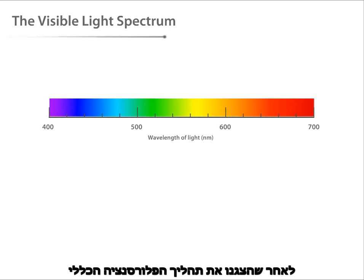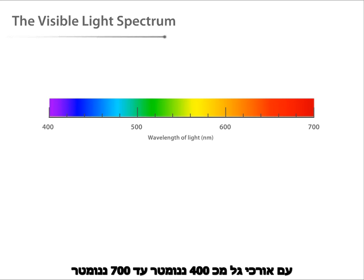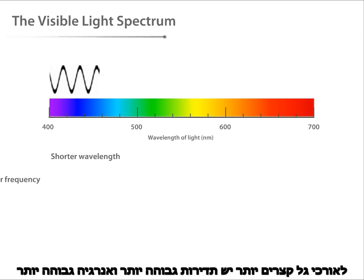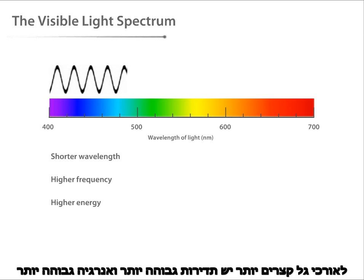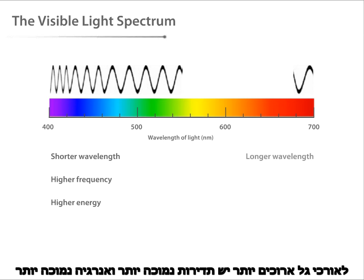Now that we've introduced the general process of fluorescence, let's take a look at the light spectrum and its importance in fluorescence. The visible spectrum is composed of light with wavelengths ranging from approximately 400 nanometers to 700 nanometers. Light waves with shorter wavelengths have higher frequency and higher energy, while light waves with longer wavelengths have lower frequency and lower energy.